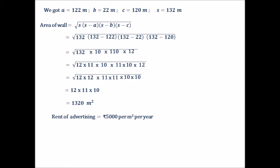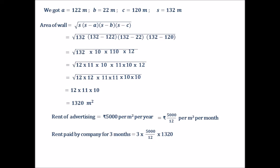The rate of advertising was given as Rs 5000 per meter square per year. Since the rate is per year and there are 12 months in a year, the rate per month is Rs 5000 divided by 12 per meter square. The rent the company has to pay for 3 months equals 3 into (5000 divided by 12) into the area of the wall, which is 1320.